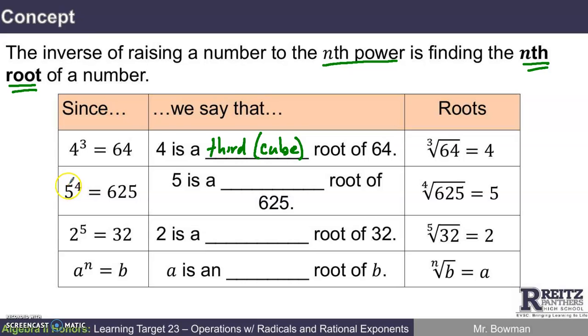Here's another example. Since 5 to the 4th power is 625, we say that 5 is a 4th root of 625. And that's read this way: The 4th root of 625 is 5.